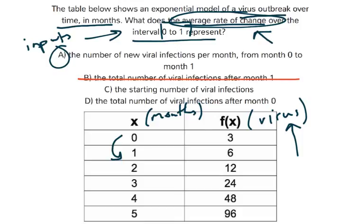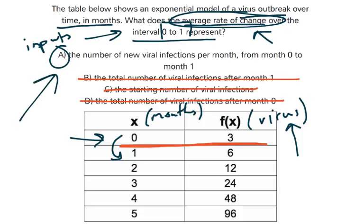C is the starting number of viral infections, which is basically telling you the value at month 0. Same problem as B — it's static, it doesn't change, and we want the average rate of change. So C is out. D is the total number of viral infections after month 0 — same thing. None of those have anything to do with how much it is changing, except for our answer, which is A.